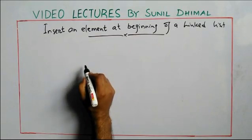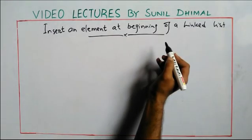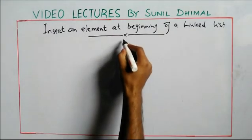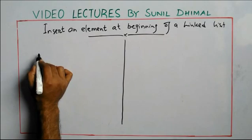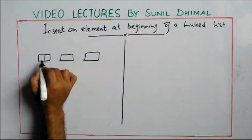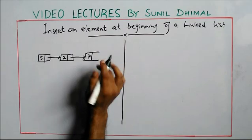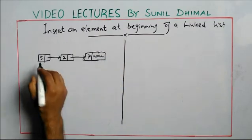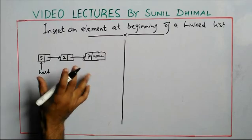Welcome to this lesson. We're going to learn about inserting an element at the beginning of a linked list. Let's assume we are given a linked list like this, with the last element pointing to null. We're also given the pointer to the first node in the list, called head.